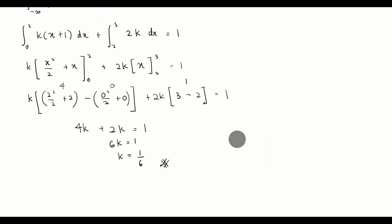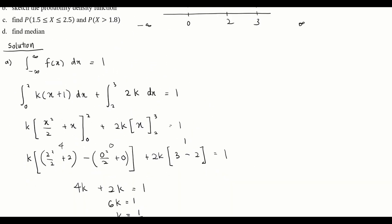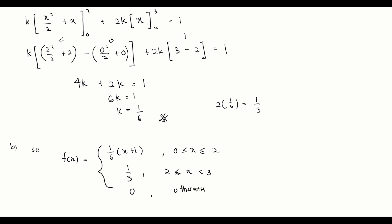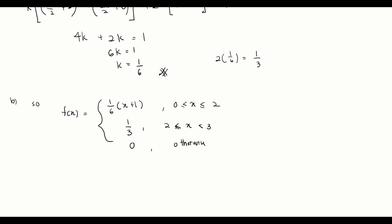For part (b), we sketch the probability density function. Substituting k = 1/6 back into the function: f(x) = (1/6)(x+1) for x between 0 and 2, and 2k = 2×(1/6) = 1/3 for x between 2 and 3, and 0 otherwise.